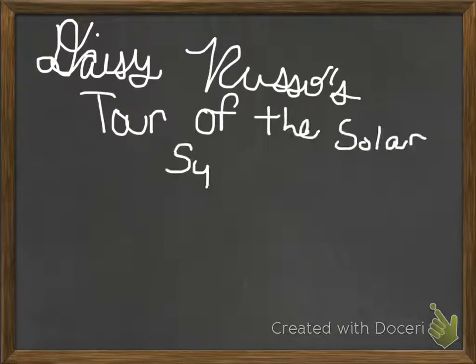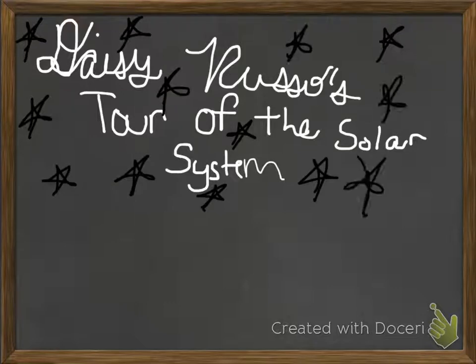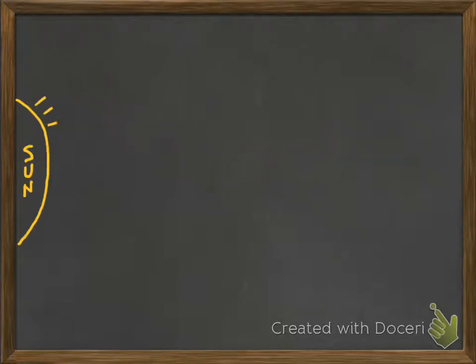This is Daisy Russo's tour of the solar system. Let's start with the Sun. The Sun is the only star in our solar system and is made only of hydrogen and helium.